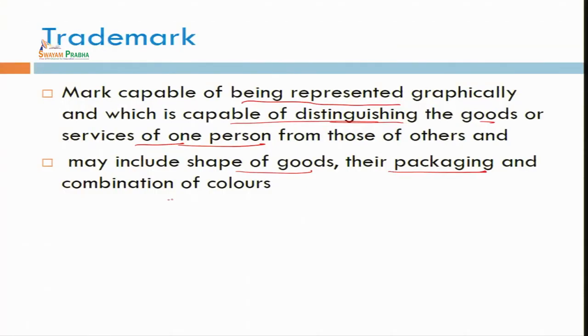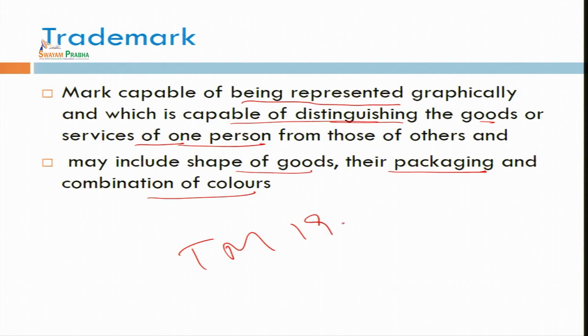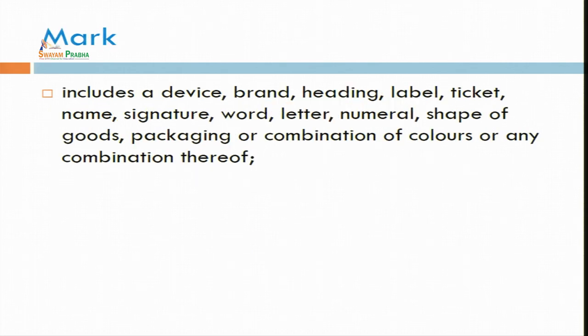A trademark may include the shape of goods, their packaging, or combination of colors. So the trademark is not only words — it may be a number or a combination of colors also. Under Indian laws, the Trademark Act was passed in 1999, from which we at present govern the trademark of every commerce and industry. This trademark includes a mark, and a specific definition is given.